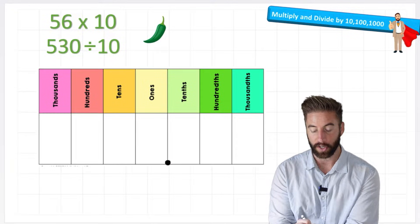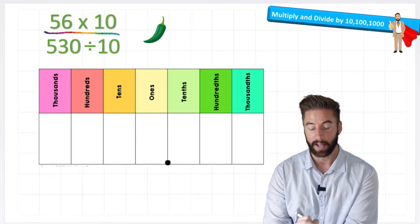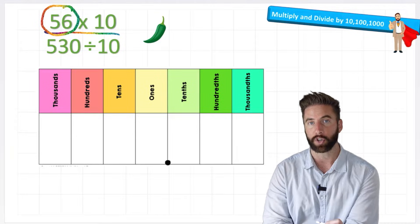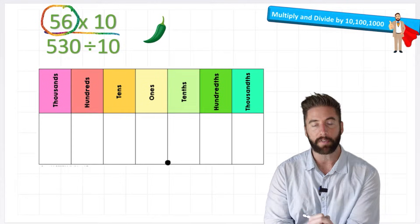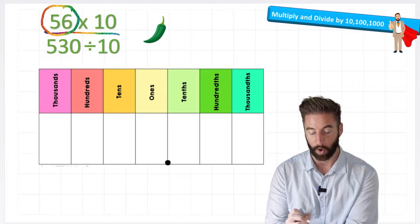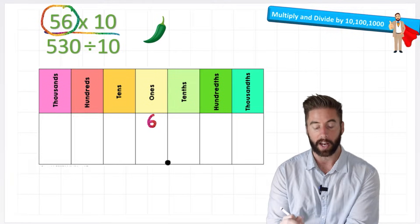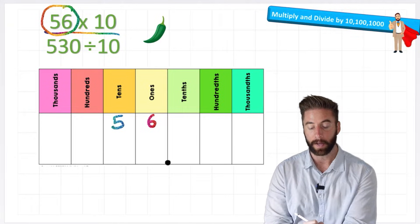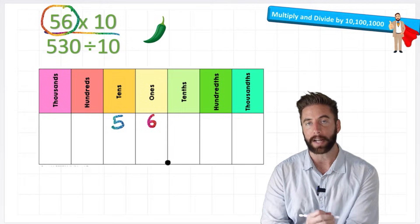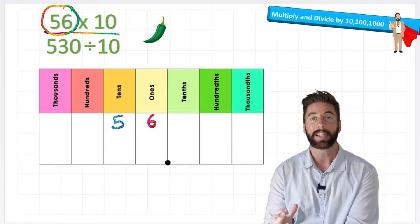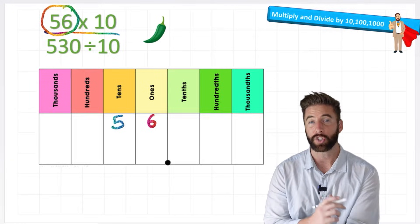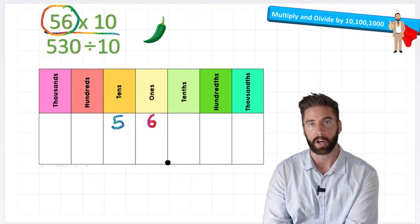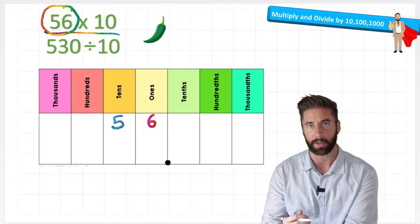Well, let's take our first question here: 56 times 10. The first thing we're going to do is put our 56 into our place value chart, really focusing on the value of these digits. In 56, I know that I have 6 ones, so I'll put my 6 in the 1s column, and I know that I have 5 tens, so I'll put the 5 in the 10s column. Now when I multiply it by 10, what I'm actually doing is making this number 10 times larger. So to show that, I can just move it one place up this place value chart, and by doing that I'm making this number 10 times larger.